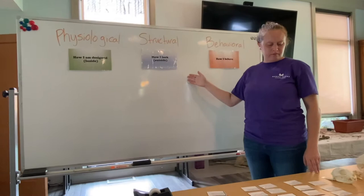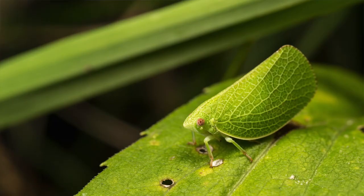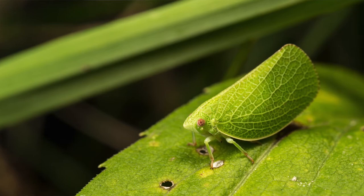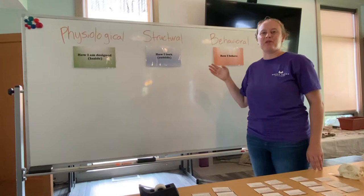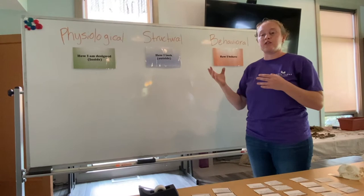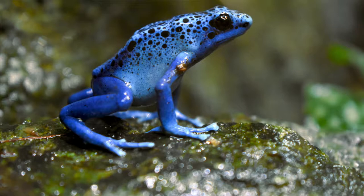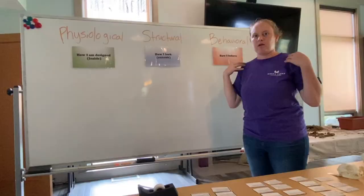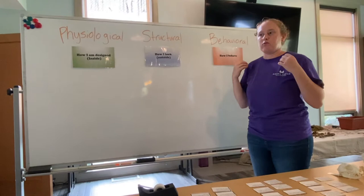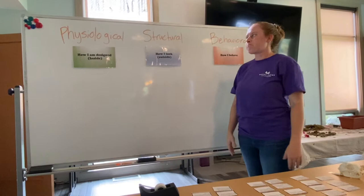A structural adaptation is like a leaf insect, which uses camouflage to make it look like a leaf, so it blends in with the leaves on the trees and a predator is confused and doesn't know the difference — helping it hide from predators. Another structural adaptation is a poisonous frog: many poisonous frogs have very bright colors on their skin, which tells predators to stay away because they are poisonous and will make you sick.